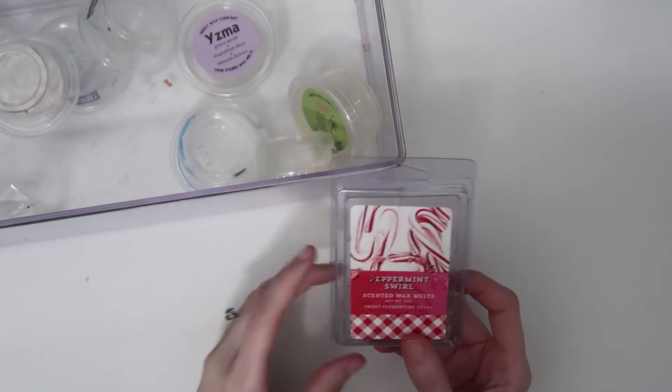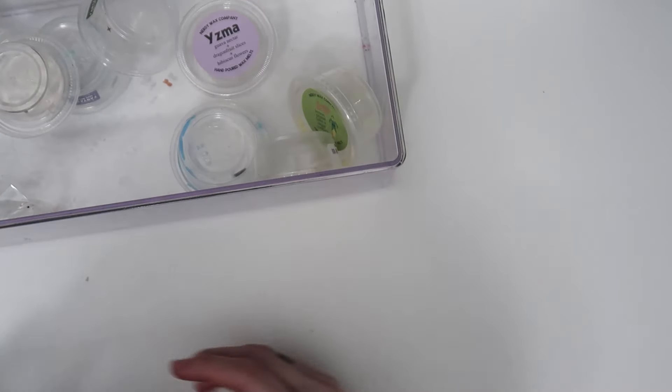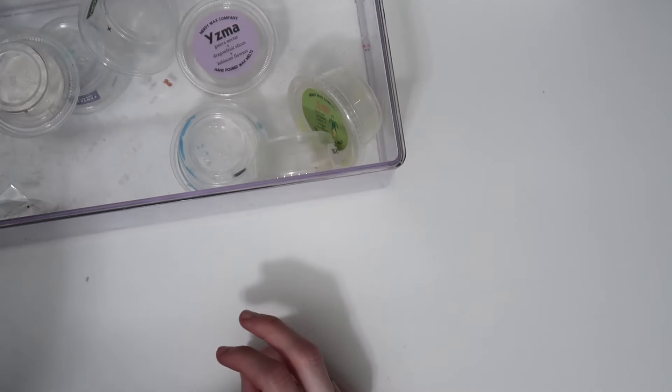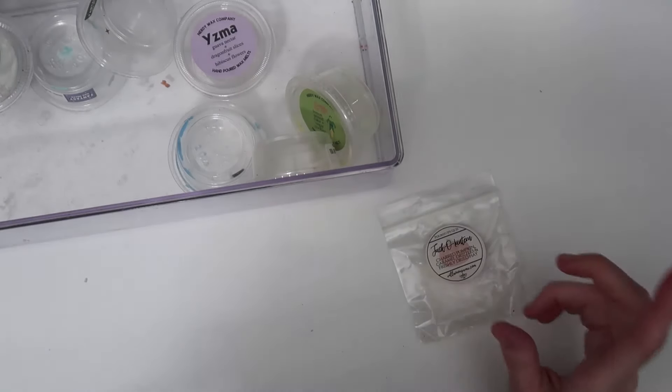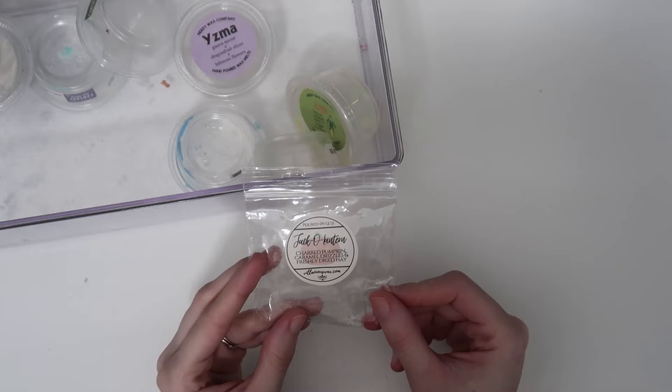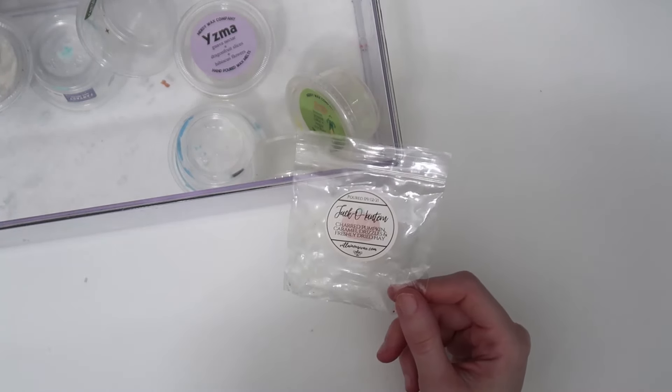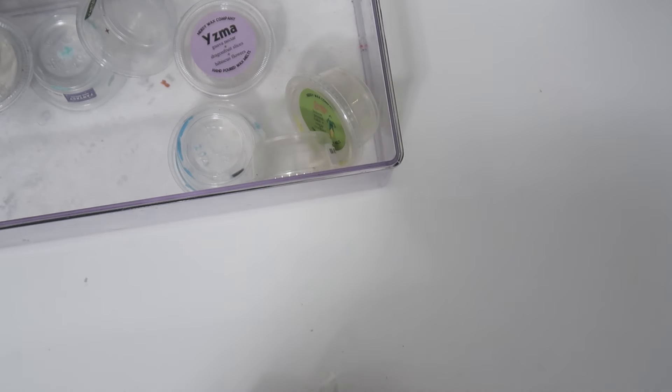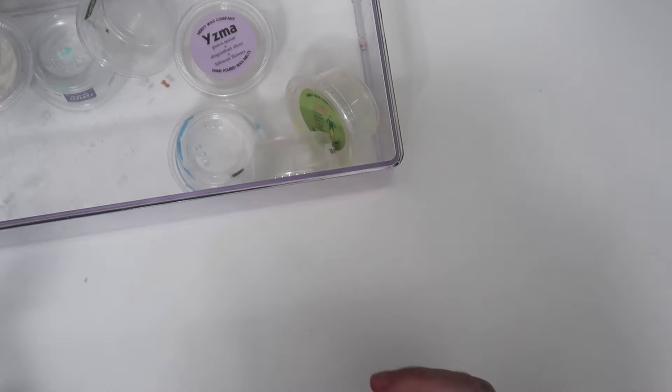I have a clamshell here from Sweet Clementine Soaps, this was gifted to me. It's in Peppermint Swirl. It was a very nice peppermint scent and this came at such a good time because I wasn't feeling too good for a couple days and this helped. Then I have one more little bag, my freebie from Villainous Wax - Jack-O-Lantern - charred pumpkin, caramel drizzles, and freshly dried hay. This is good but it's very almost like a garden dirt smell. It's good but it's just not something I necessarily love.